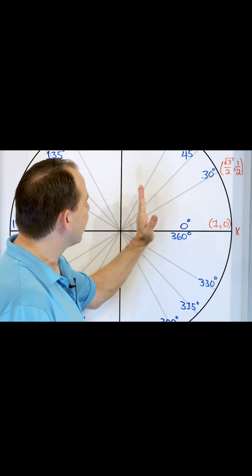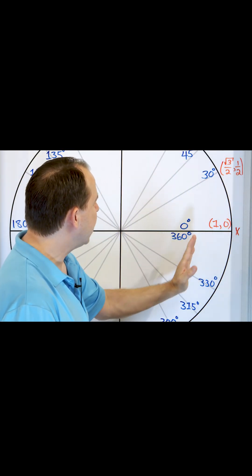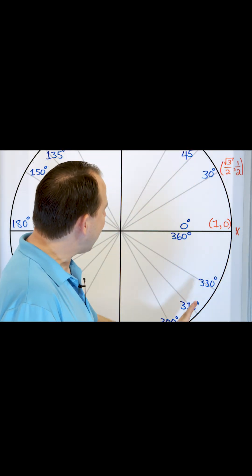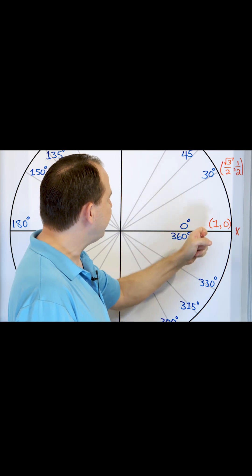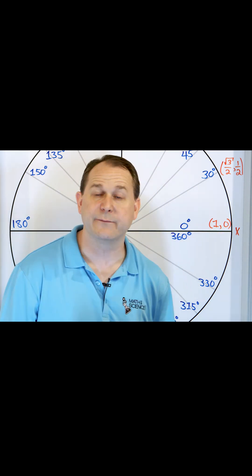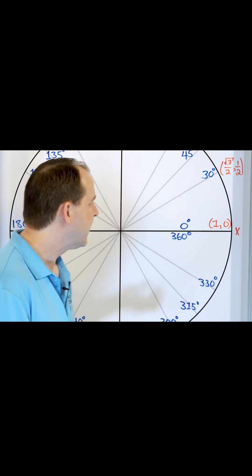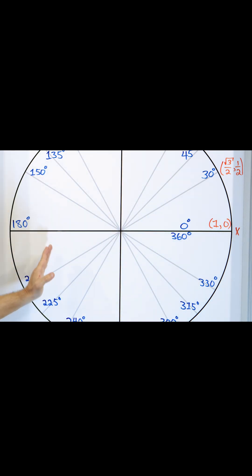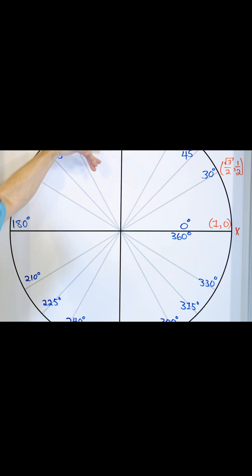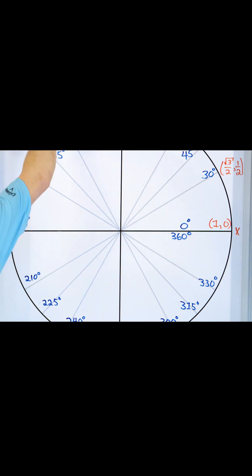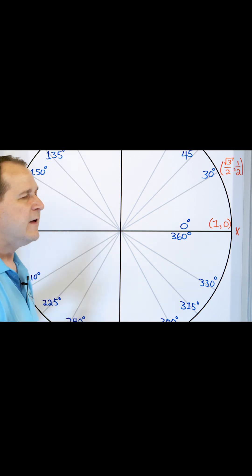Anybody over on the right-hand side, the positive x-axis — any of these angles will give me projections that are positive, which means the cosines will be positive. And over here, the cosines will always be negative for all of these angles, all the way over here, because any projection from down below or up above is gonna land over here.